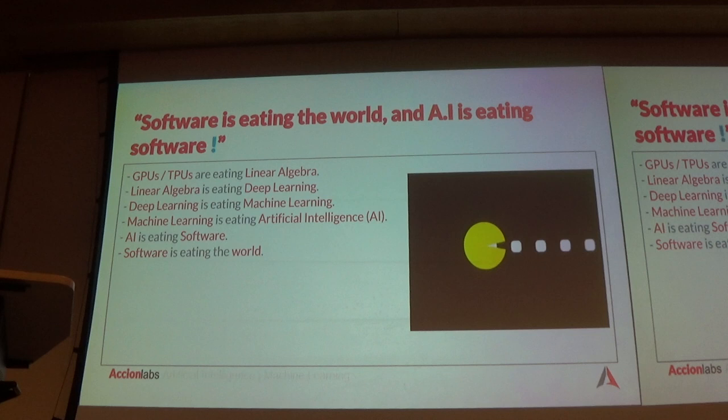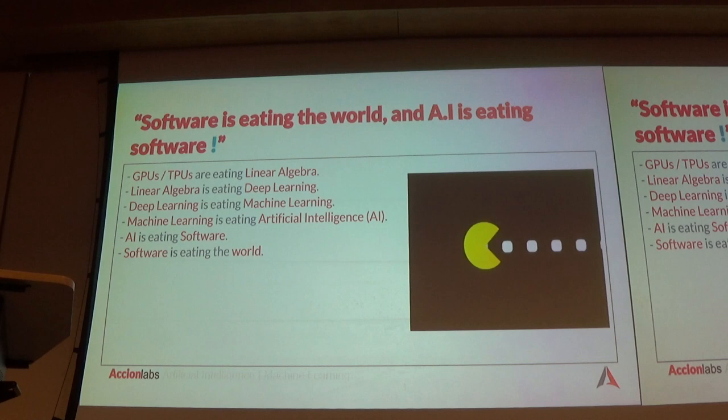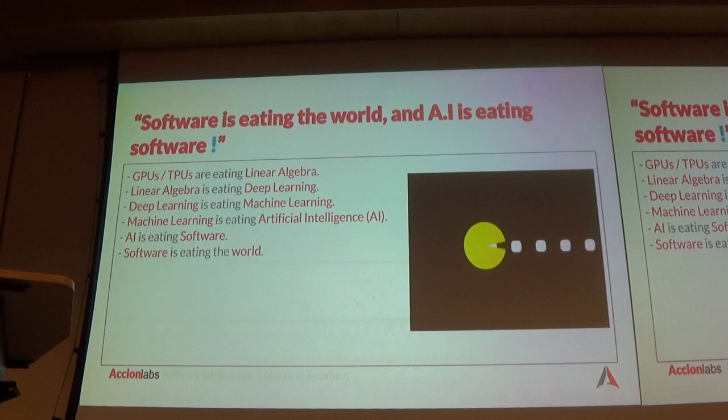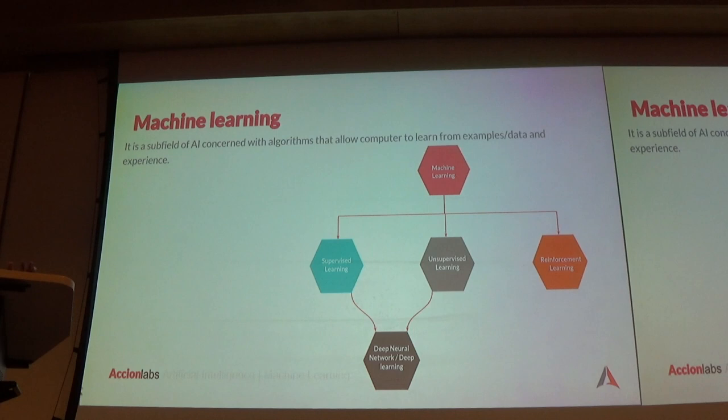As you know, software is eating the world and AI is eating software. GPU and TPU are eating the linear algebra. Linear algebra is eating deep learning, deep learning is eating machine learning, machine learning is eating artificial intelligence, and AI is eating software and software is eating the world.